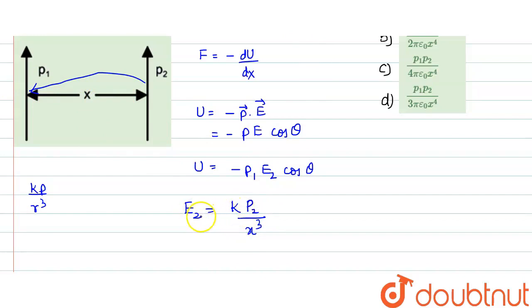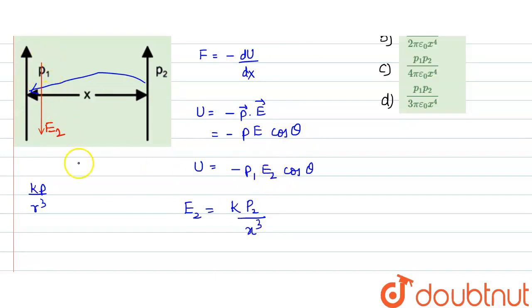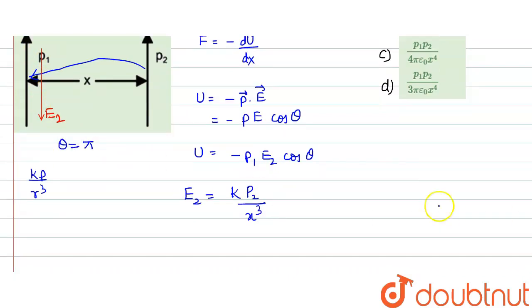The direction of the electric field would be opposite to the direction of the dipole moment. Since the dipole moment is going in the upward direction, the electric field E2 (created by p2 interacting with p1) goes in the downward direction. So the angle between p1 and E2 is clearly π, that is 180 degrees.